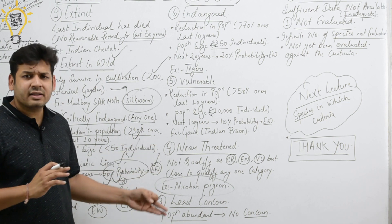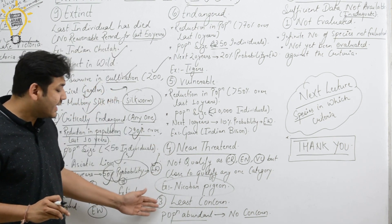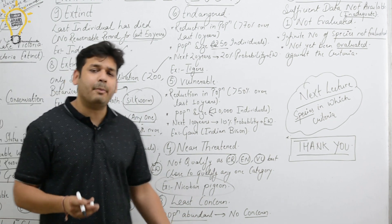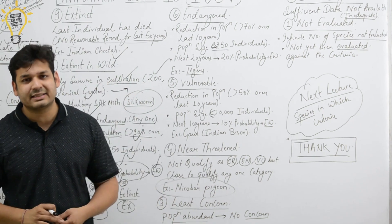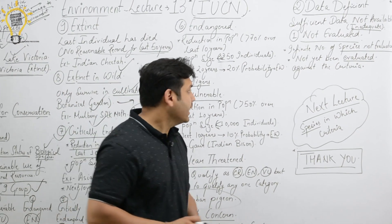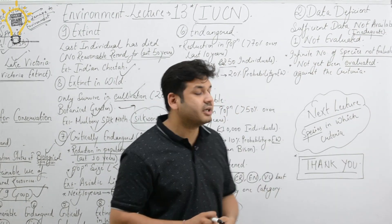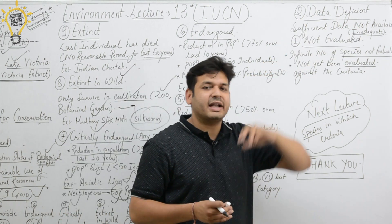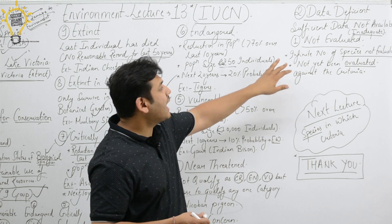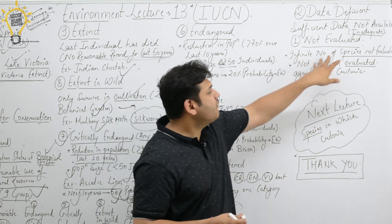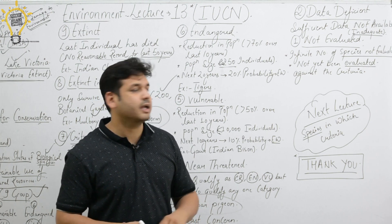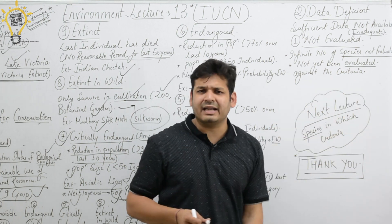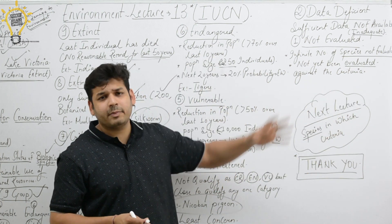These three — Vulnerable, Endangered, and Critically Endangered — come under Threatened species. Next is Least Concern: as the name suggests, the concern is minimal and the population is evidently stable — it is called Least Concern. Then Data Deficient: as the name suggests, sufficient data is not available — inadequate data — so the species is placed in the Data Deficient category. And lastly, Not Evaluated: given the infinite number of species, many have simply not been evaluated against any criteria yet — they are placed in Not Evaluated.